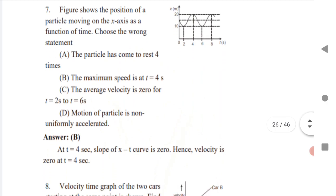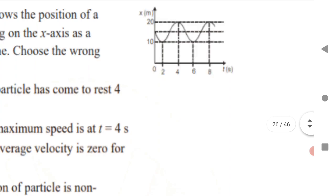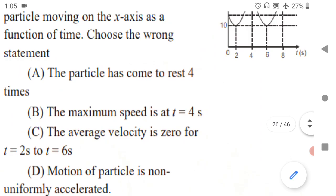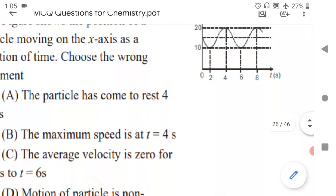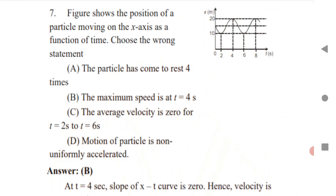Next question: from the position-time graph of a particle moving along the x-axis, choose the wrong statement. From the graph, the particle comes to rest at t = 2, t = 4, and t = 8. The wrong statement is that the particle has maximum speed at t = 4.